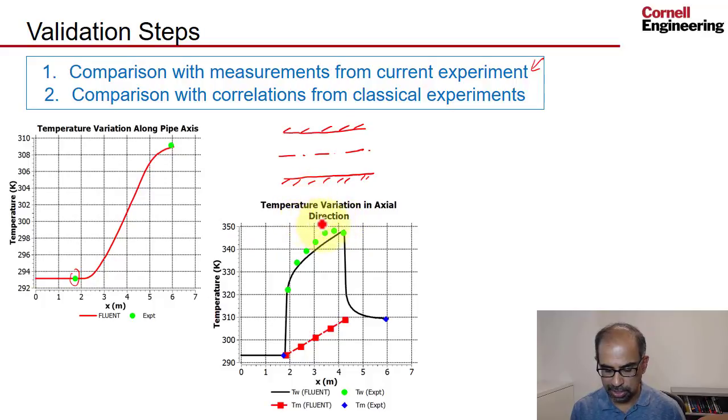This plot shows the temperature variation along the wall. So that's this black line here from the simulation and then the corresponding measurements. There are probes along the wall here in the heated section and again you can see it captures that reasonably well. The green circles are the experiment.